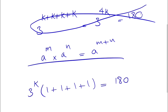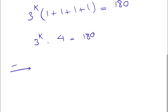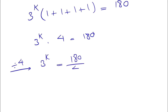So we have 4 times 3 to the k equal to 180. We divide each side of the equation by 4, giving us 3 to the k on the left side and 180 divided by 4, which is 45, on the right side. So 3 to the k equals 45.